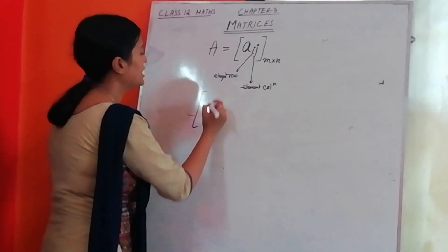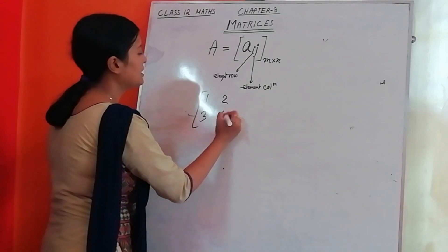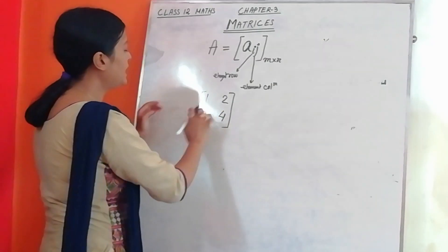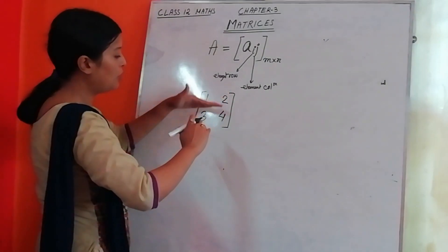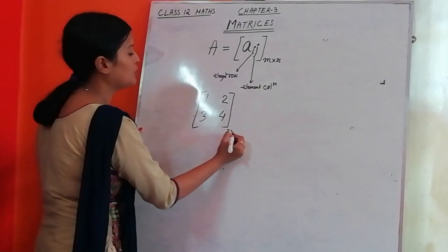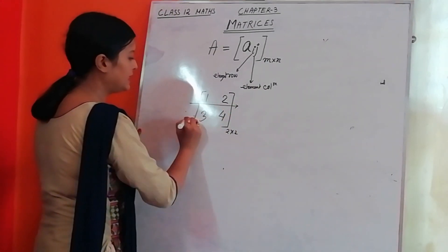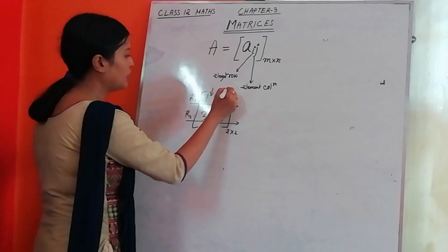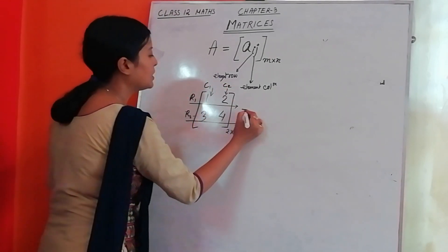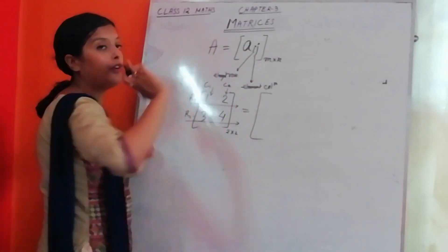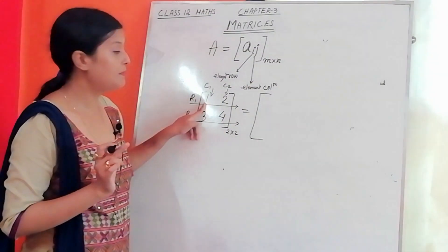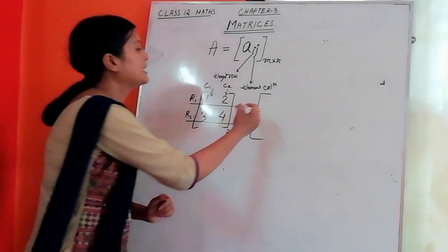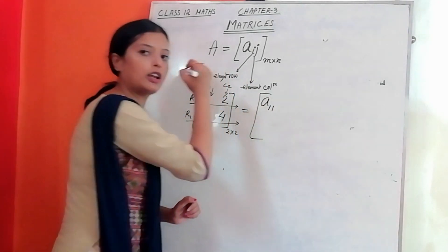Let me explain with an example. Suppose this is our matrix. The order is 2 rows and 2 columns, with rows R1 and R2 and columns C1 and C2. The element 1 is in row 1 and column 1, so I write it as A11. The next element is at row 1 and column 2, so I write it as A12.